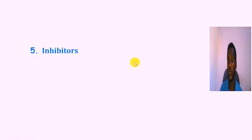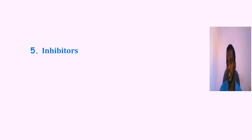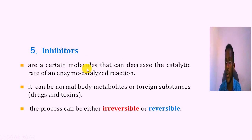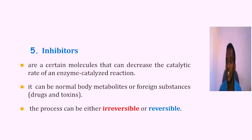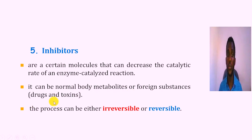The next factor is the inhibitor. An inhibitor is a certain molecule that decreases or inhibits the activity of an enzyme. In the enzyme activity, the enzyme activity will decrease or be inhibited. In this case, the body's metabolic product, a drug, or a toxic substance can act as an inhibitor.